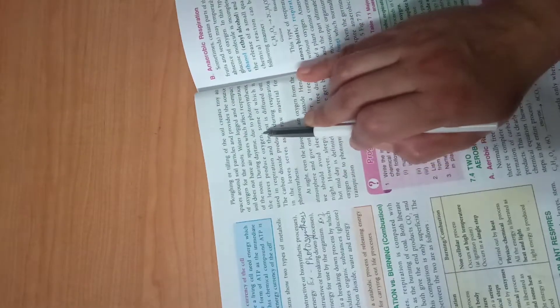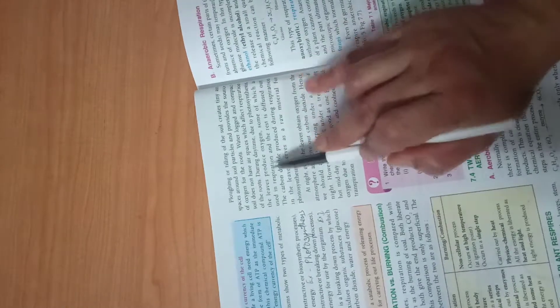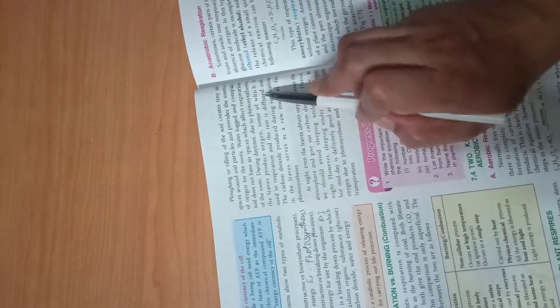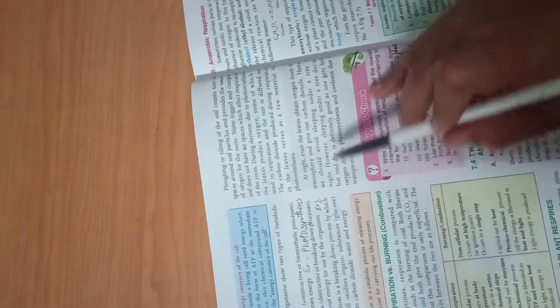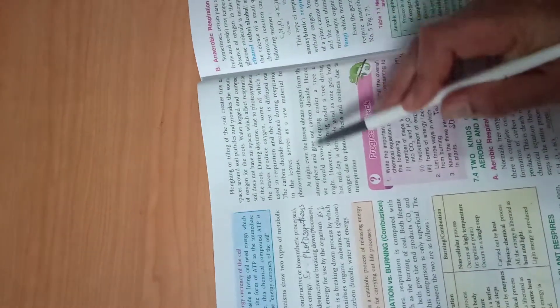During daytime, due to photosynthesis, the leaves produce oxygen. Some of which is used in respiration and rest is diffused out. So carbon dioxide produced during respiration in the leaves serves as a raw material for photosynthesis.